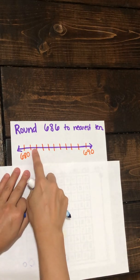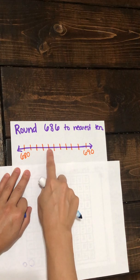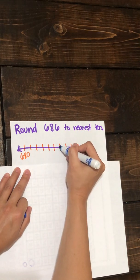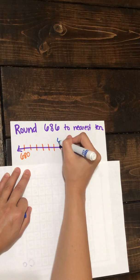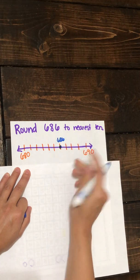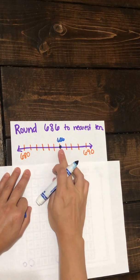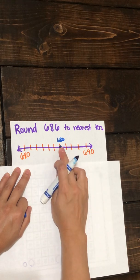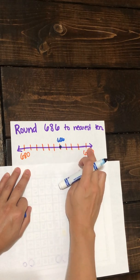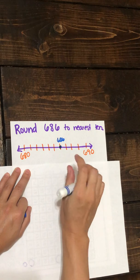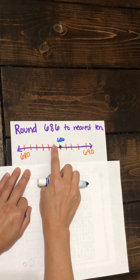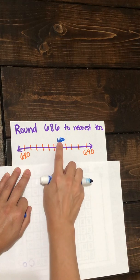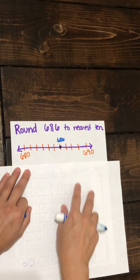Counting up: 681, 682, 683, 684, 685, 686 — this is 686. Now looking at our number line, is 686 closer to 690 or closer to 680? We see that it is closer to 690.